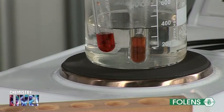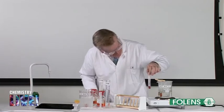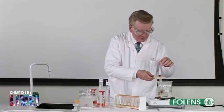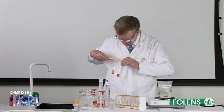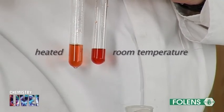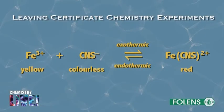Note that the red colour becomes lighter in the test tube placed in hot water. In this case, the equilibrium shifts to the left of the equation shown on the screen — that is the direction of the endothermic reaction — in order to absorb the added heat. Therefore, the red colour becomes lighter and the yellow colour appears. This observation is in keeping with Le Chatelier's principle.